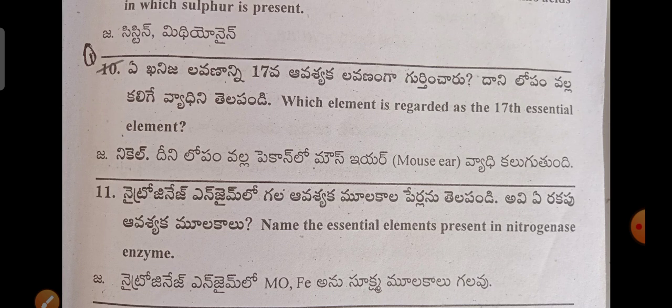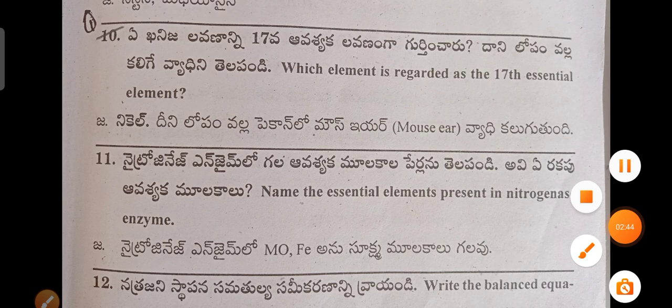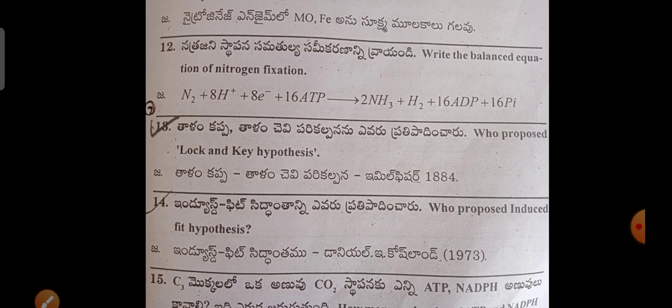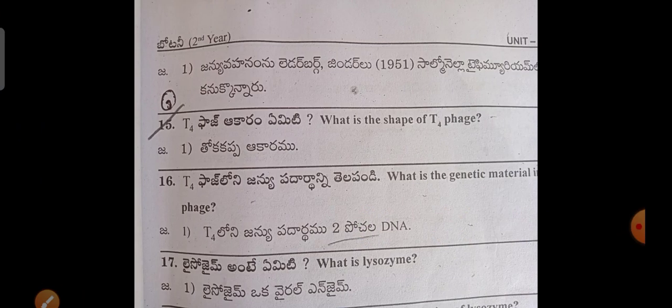Which element is required as the 17th essential element? It is thearin and the mouse ear. If you have a question paper, you can see the answers. The first question is the 10th question. Who proposed the lock and key hypothesis? This is the 14th question. What is the shape of T4 phage?